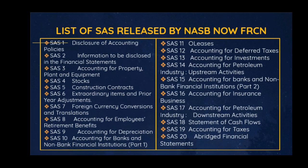SAS 4 Stocks, SAS 5 Construction Contracts, SAS 6 Extraordinary Items and Prior Year Adjustments, SAS 7 Foreign Currency Conversions and Translation, SAS 8 Accounting for Employees' Retirement Benefits, SAS 9 Accounting for Depreciation, SAS 10 Accounting for Banks and Non-bank Financial Institutions Part 1, SAS 11 Leases, SAS 12 Accounting for Deferred Taxes, SAS 13 Accounting for Investments, SAS 14 Accounting for Petroleum Industry Upstream Activities, SAS 15 Accounting for Banks and Non-bank Financial Institutions Part 2, SAS 16 Accounting for Insurance Business, SAS 17 Accounting for Petroleum Industry Downstream Activities, SAS 18 Statement of Cash Flows, SAS 19 Accounting for Taxes.